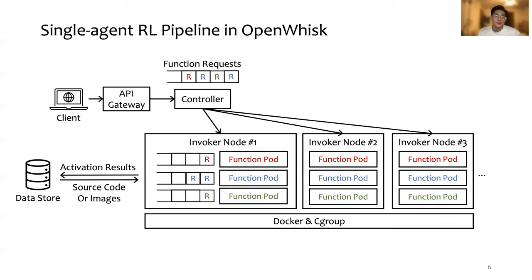Next, let's first see how RL pipeline is plugged into a serverless platform. In our project, we chose an open-source serverless platform, OpenWhisk, because all serverless platforms share similar architectures. The controller is responsible for distributing the function requests received from the API gateway across all invoker nodes.